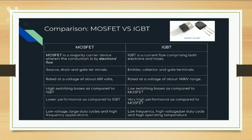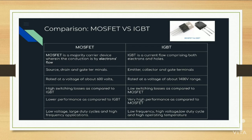Now we will see the comparison between MOSFET and IGBT. MOSFET is a majority carrier device wherein conduction is by electron flow. In MOSFET, three terminals are present: source, drain, and gate. MOSFET is rated at a voltage of about 600 volts, has higher switching losses as compared to IGBT, and lower performance as compared to IGBT. It is used in low voltage, large duty cycle, and high frequency applications.